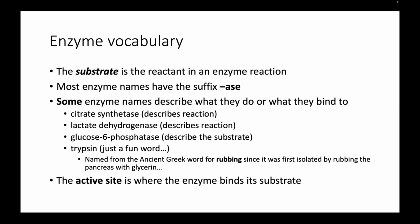Some enzymes have names that don't describe their function at all — for example, trypsin comes from the ancient Greek word for rubbing, since it was first isolated by rubbing the pancreas with glycerin. You just have to know what that enzyme does. The active site is where the enzyme binds its substrate — it's only a small volume of the whole enzyme, and that's where substrate binding occurs.